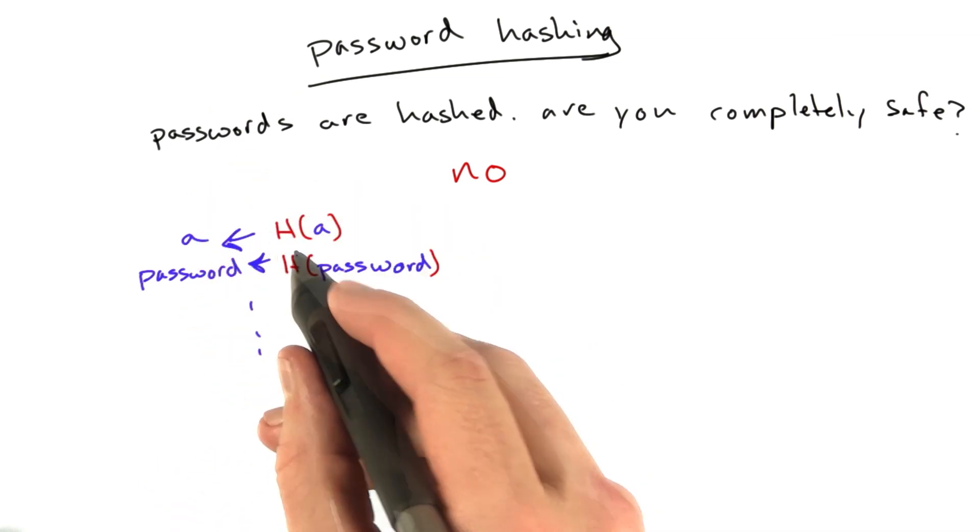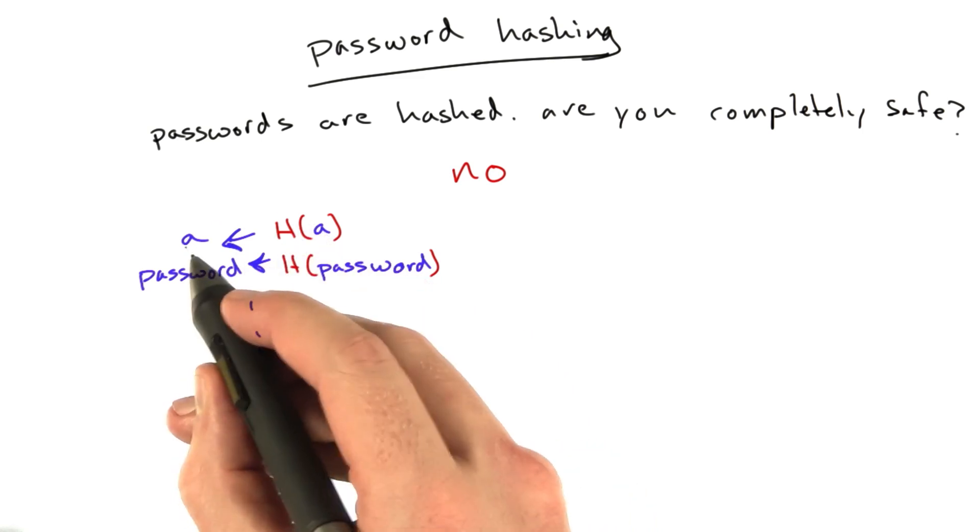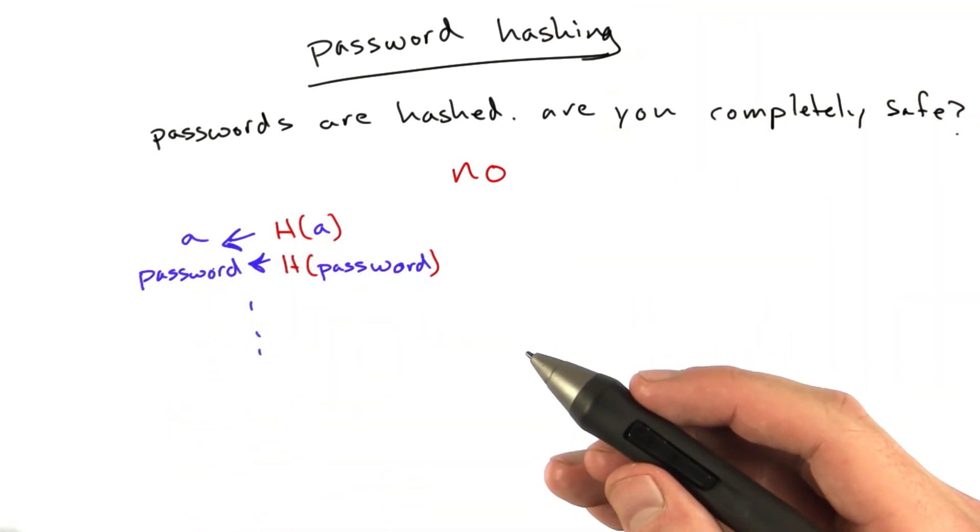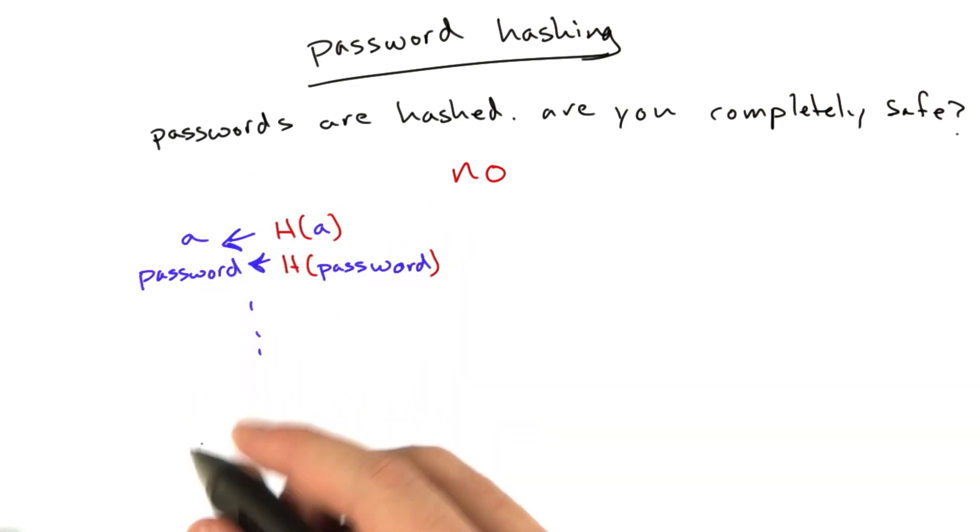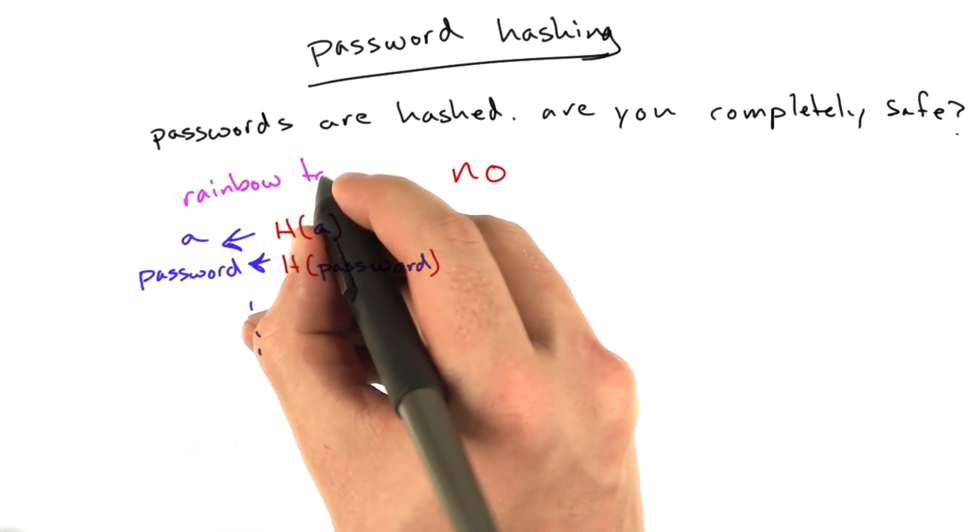If you created a mapping of the SHA-256 of every word to the original word, all of a sudden you get a database of a bunch of SHA-256 passwords, you can look up what the password is instantly. And this table has a name. It's called a rainbow table.